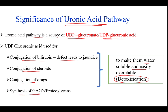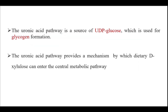The uronic acid pathway is also involved in synthesis of glycosaminoglycans or proteoglycans. It is a source of UDP-glucose used for glycogen formation, and it provides a mechanism by which dietary xylulose can enter the central metabolic pathway.